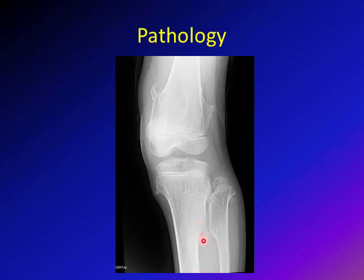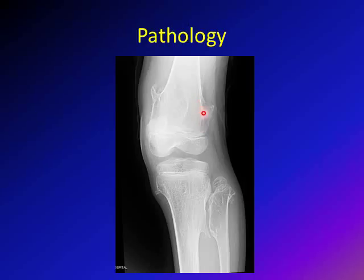Here is another pedunculated osteochondroma with a stalk, and its medulla is continuous with the medulla of the main bone. There is also another osteochondroma with a broad base — still, its medulla is continuous with the medulla of the main bone. So pathologically, the osteochondroma can be sessile or pedunculated, and in both cases the medulla of the osteochondroma is continuous with the medulla of the main bone.